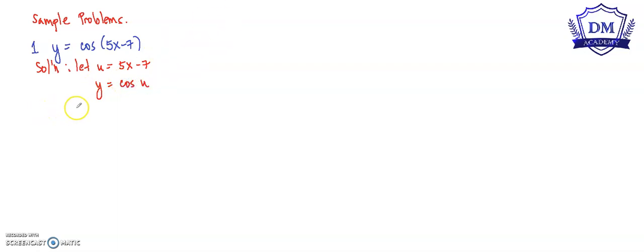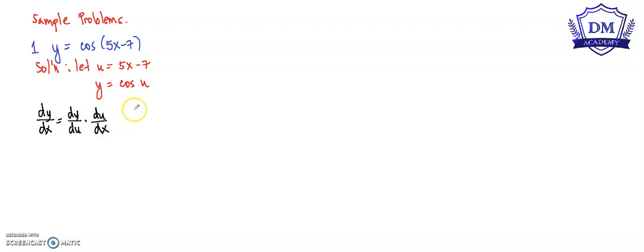Using the chain rule, we have dy over dx is equal to dy over du times du over dx.